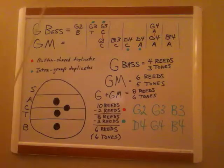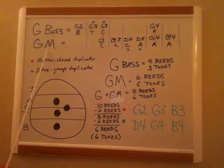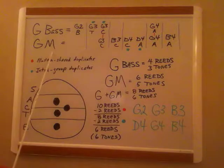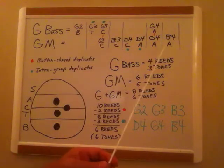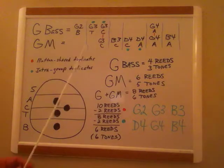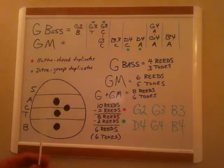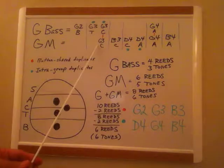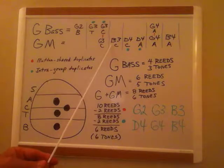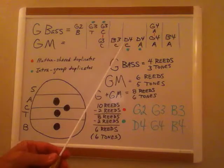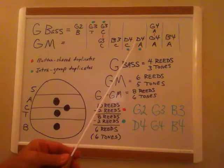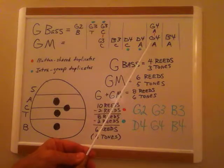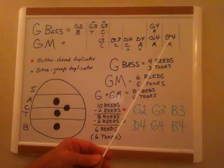Now when you press the G major button, you have six reeds in play. In other words, air is passing through six reeds. You have the G3 from the contralto reed set, B3 from the contralto reed set, D4 from the contralto reed set, D4 from the alto reed set, G4 from the alto reed set, and B4 from the alto reed set.